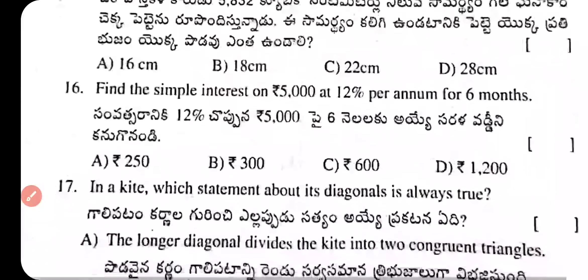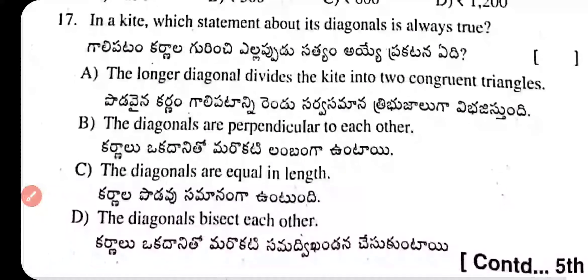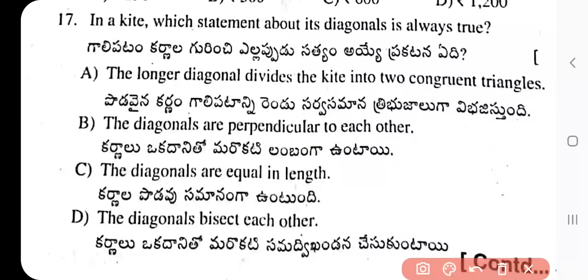Question 17: In a kite, which statement about diagonals is always true? Option A: The longer diagonal divides the kite into two congruent triangles. Option B: The diagonals are perpendicular to each other. Option C: The diagonals are equal in length. Option D: The diagonals bisect each other. The correct answer is option B — the diagonals are perpendicular to each other.